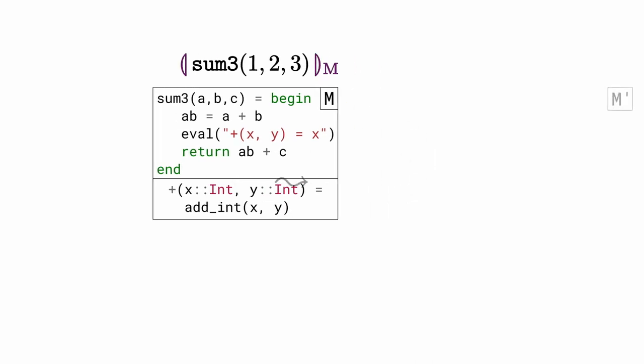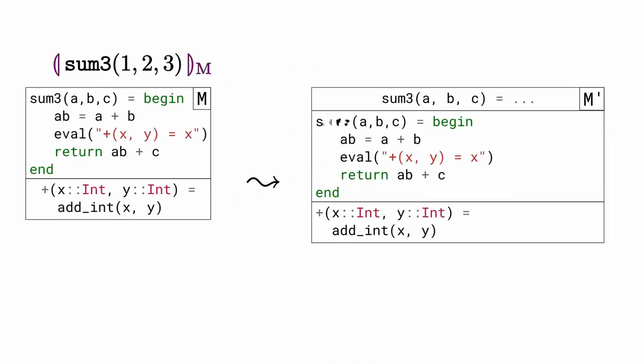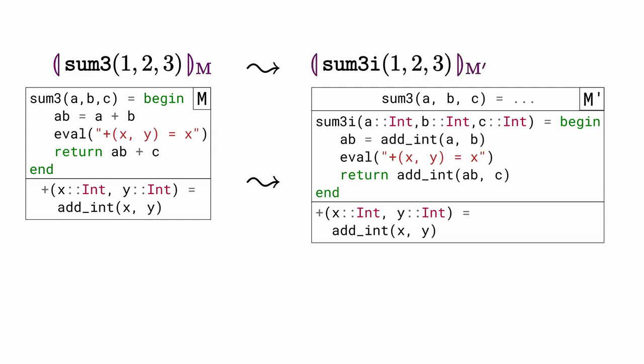Therefore, if sum3 is specialized for integer arguments, as shown in table m', it is safe to inline both nested calls to plus. Furthermore, the original call to generic sum3 can be replaced by a call to its optimized, specialized version within the optimized table.